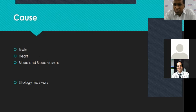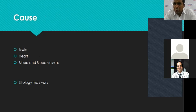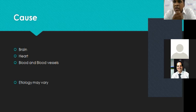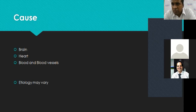The causes of stroke can be grouped into three areas: problems in the brain, problems in the heart, or problems in the blood and blood vessels. We will focus mainly on ischemic strokes, which represent 85% of presentations. Brain causes include blockage of vessels supplying the brain — carotid disease, atherosclerotic disease involving the MCA or distal vessels. Cardiac causes include poor LV function with an LV clot leading to stroke, and atrial fibrillation, which is a very common cause of stroke in elderly people.